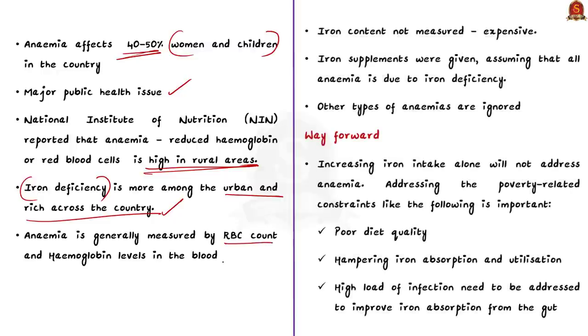Generally, we measure anemia by RBC count and hemoglobin levels. We don't measure the iron content because it is more expensive. So, when we detect reduced RBC or hemoglobin in blood, iron is simply prescribed. Without even measuring iron content in the blood, we are simply giving iron as a solution to anemia. We are treating all anemias as iron deficiency anemia. This has now become a policy. Iron supplements were given assuming that all anemia is due to iron deficiency. So, we are ignoring other types of anemia. This leads to poor translation of policies into results. Increasing iron intake alone will not address anemia. We need to address poverty related constraints like poor diet quality, factors hampering iron absorption and utilization, and high load of infection to bring down anemia load in the population. This is what is stressed in the article.